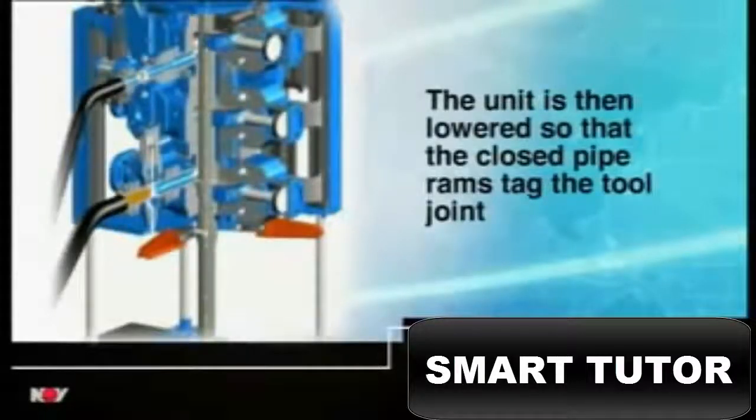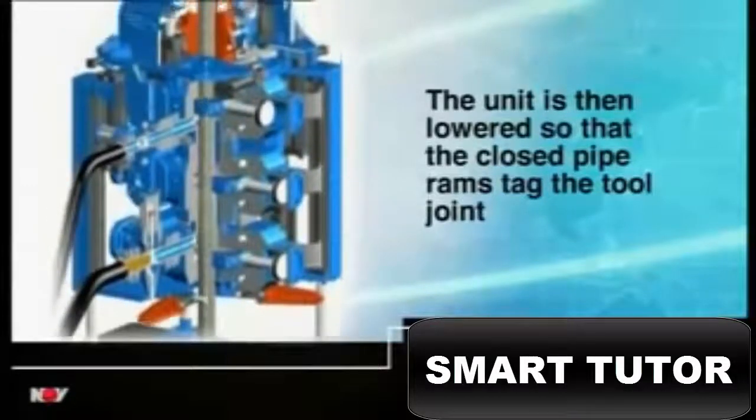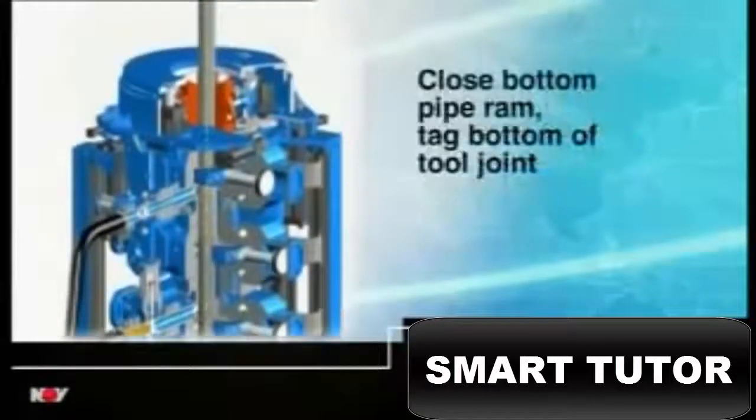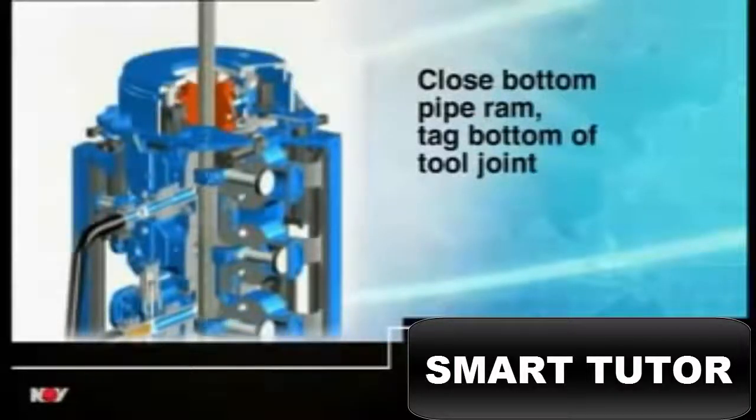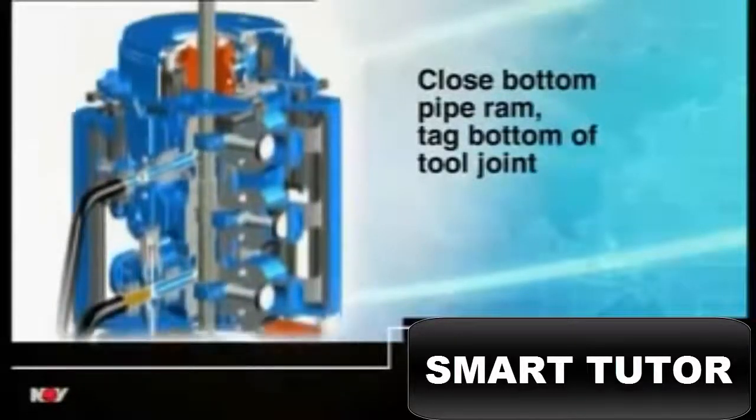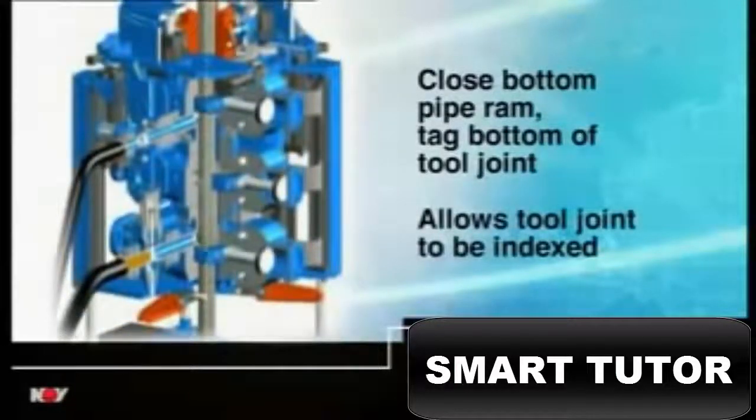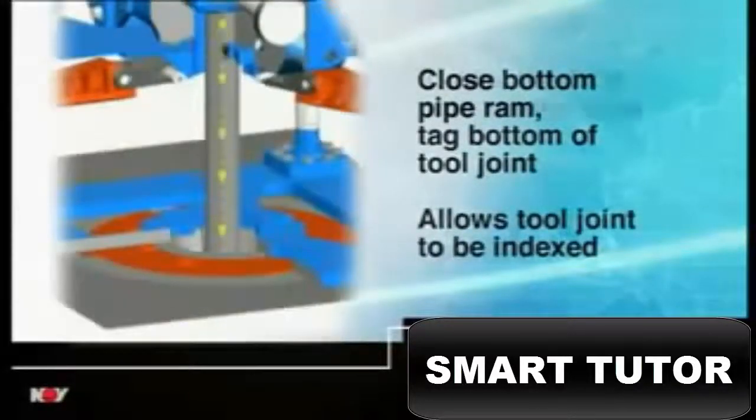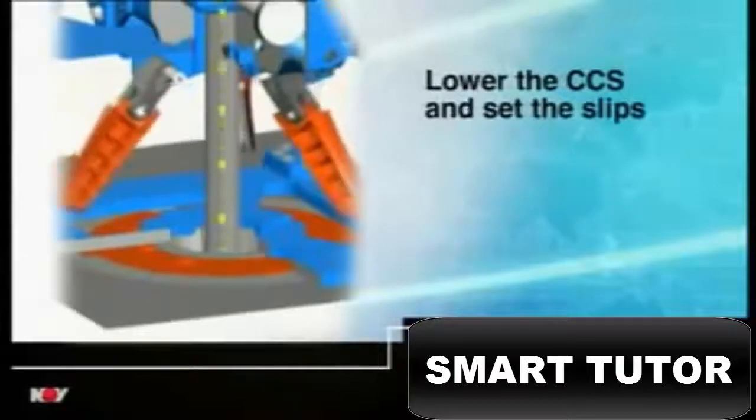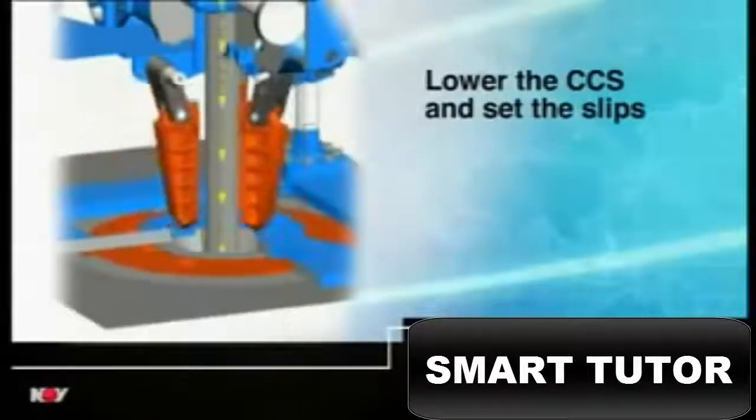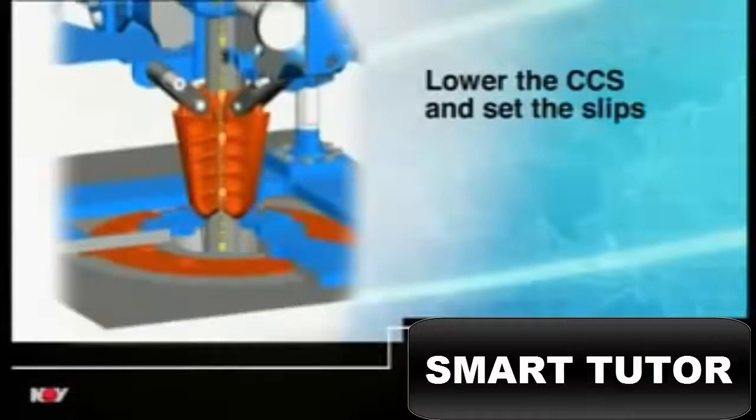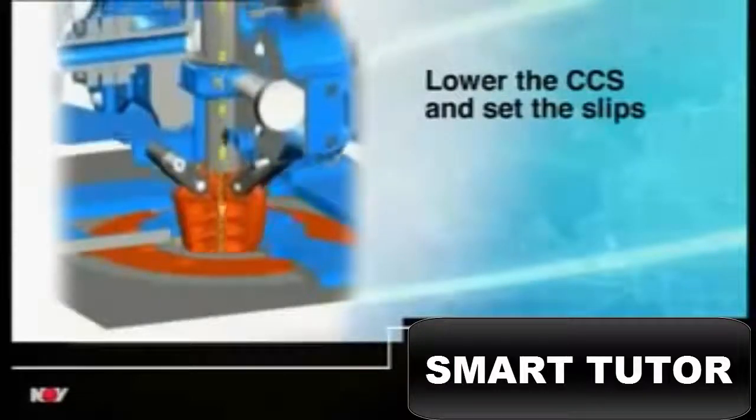The unit is then lowered, so that the closed pipe rams tag the upset of the tall joint. The lower pipe rams are then closed and the unit is raised again until the rams tag the bottom of the tall joint. This indexes the tall joint for the built-in computer. The drill pipe slips are then moved hydraulically into their setting position and the drill string and unit lowered together, setting the slips in the rotary table.